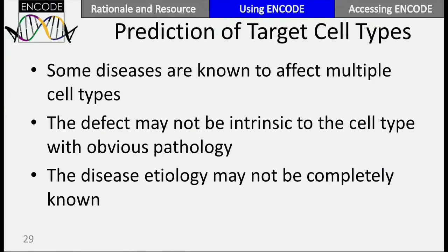Lastly, I'd like to talk about predicting target cell types. If you think about heart disease, we know it affects multiple cell types — smooth muscle cells in vessels, endothelial cells, macrophages, liver cells, platelets. So if one finds a genetic connection to heart disease, that doesn't tell you what cell type that variant is working in. The defect doesn't have to be intrinsic to the cell type that has the pathology either. There's at least one example in severe combined immunodeficiencies where a mutation in epithelial cells is important, because epithelial cells are the niche that developing lymphocytes form in.